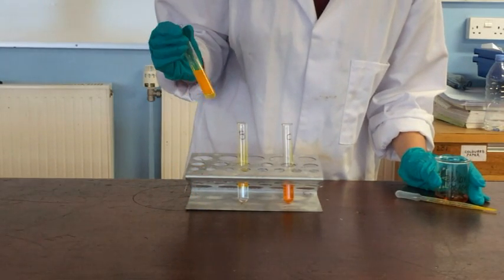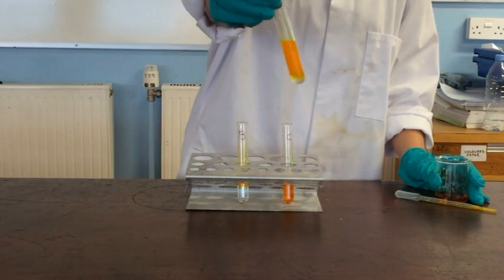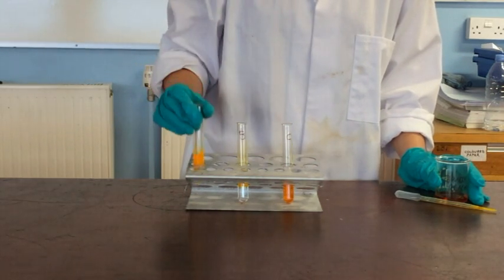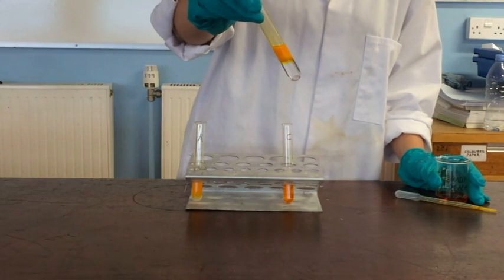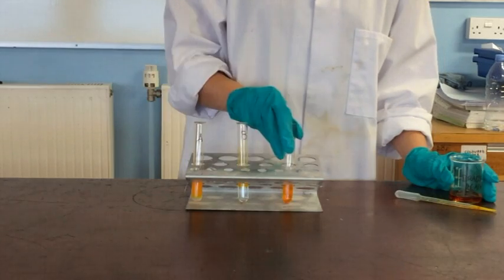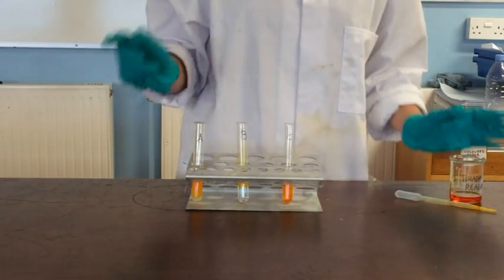So there we go, in A we've definitely got an aldehyde or a ketone. You can see the orange precipitate there. And also in B you can see there is an orange precipitate. C has not formed a precipitate and so it's not an aldehyde or a ketone.